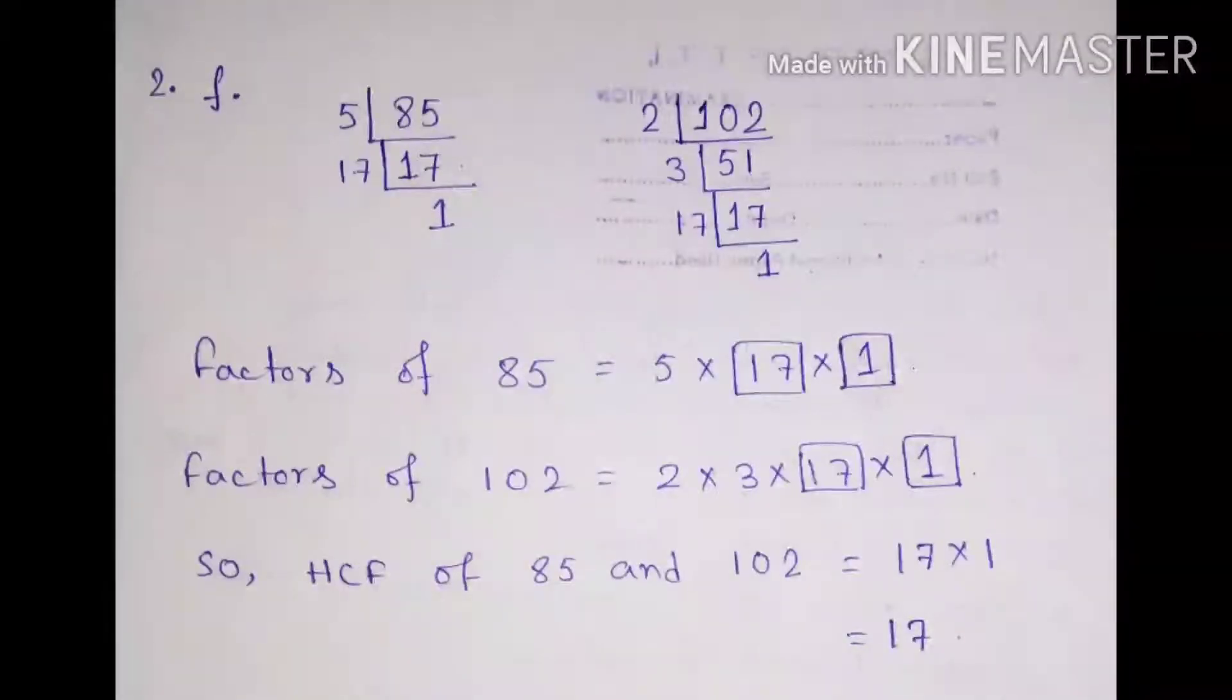Here we have taken question number 2F and here you have to find the HCF of 85 and 102. First we have taken 85 and it cannot be divided by 2 and 3. So we have taken prime factors of 5. Then after division by 5 we got 17 and 17 is itself a prime number.